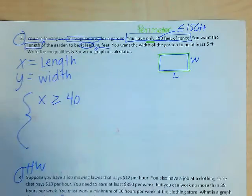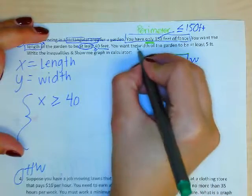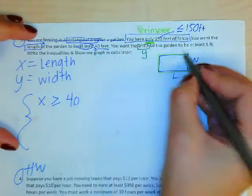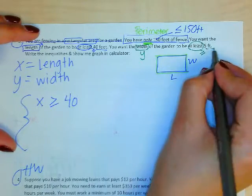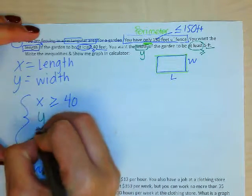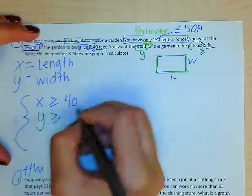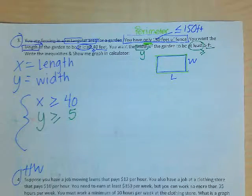Okay? And I have my next one, which says the width, that's my other variable, which was y, of the garden has to be, again, at least. So that means that or greater, it's a minimum, 5 feet. So now I have my next inequality. Okay?